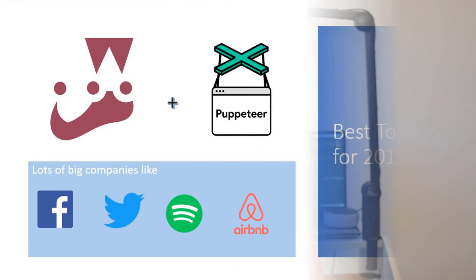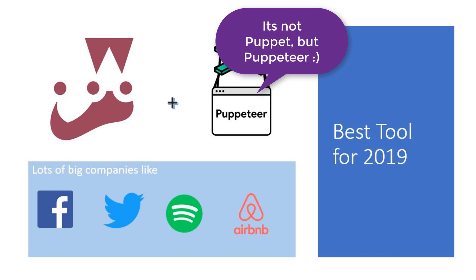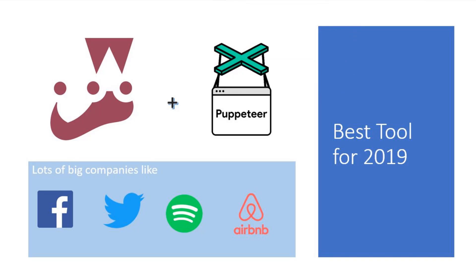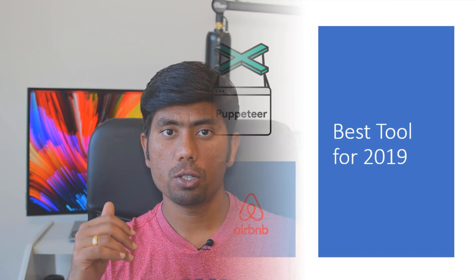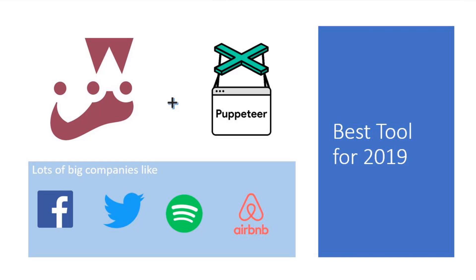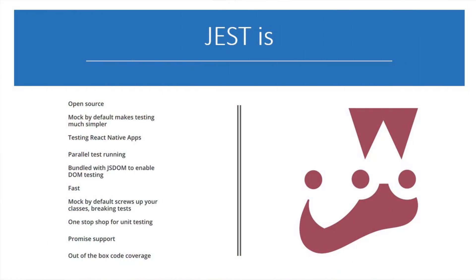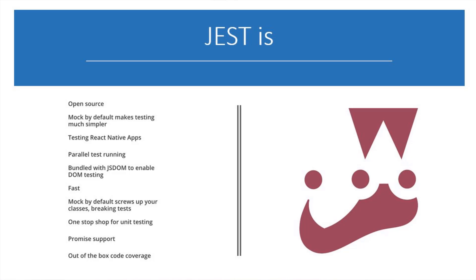The one tool — maybe two tools — to learn for 2019 is Jest and Puppeteer. Jest is used by Facebook to test all JavaScript code including React applications. One of Jest's philosophies is to provide an integrated zero-configuration experience. Jest is highly extendable and is used by companies like Facebook, Twitter, Airbnb, and Instagram. It is open source, mocked by default making tests easier, supports React Native, bundles js-dom for DOM testing, runs tests in parallel, is faster, and provides out-of-the-box code coverage — a one-stop shop for unit testing with promise support.